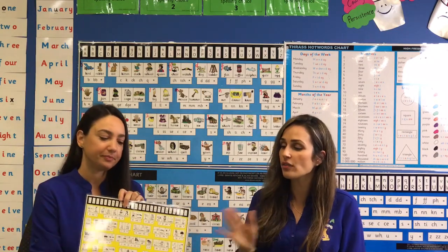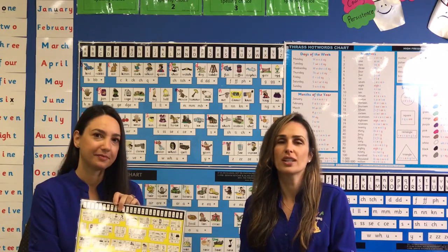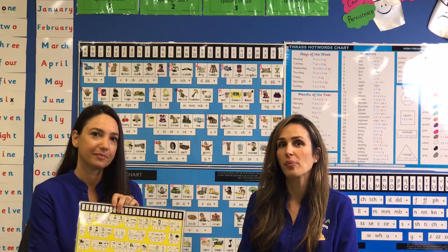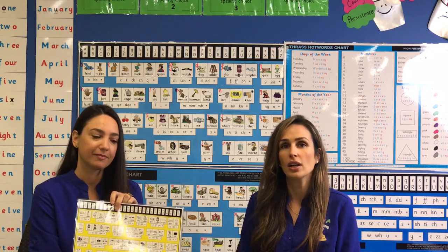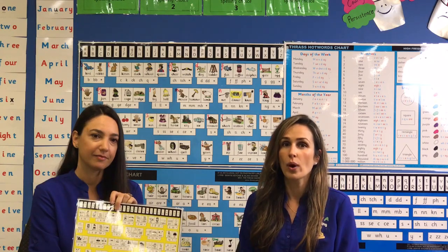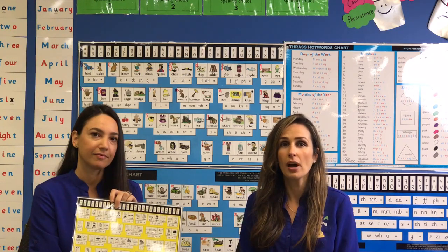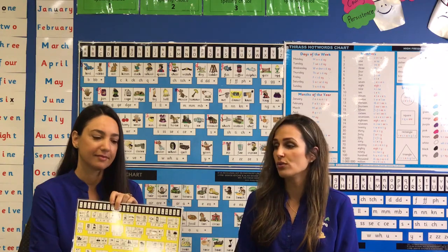Today, before we start, what we would like you to do is go and get your Thrass chart. Make sure you have your Thrass chart right next to you while we read this story. Now if you're new to Lever Learning and you don't have a Thrass chart, you can purchase one directly off the Thrass Institute website. We'll put a link down the bottom so you can click directly onto them. Please note this is strictly copyright so you need to purchase it directly through Thrass.